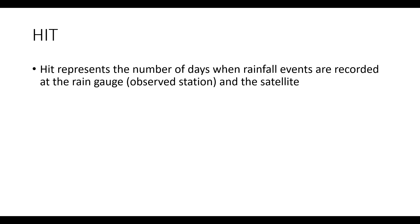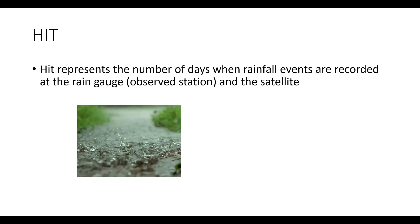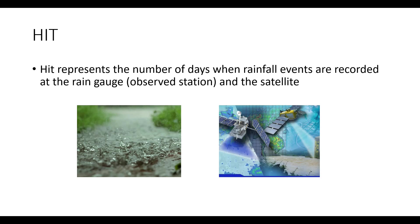What does 'hit' represent? In general terms, it will compare — for example, January 1st of 2022 — if the observed data is saying there is rainfall on the ground, and the satellite dataset you are using also says that there is rainfall (anything more than 0mm), then if both are saying that there is some value of rainfall, that is termed as a hit.